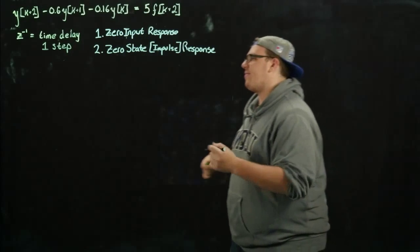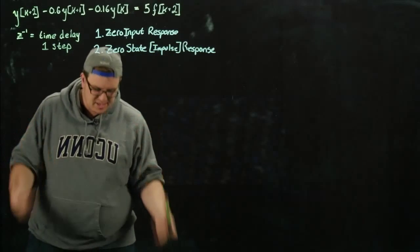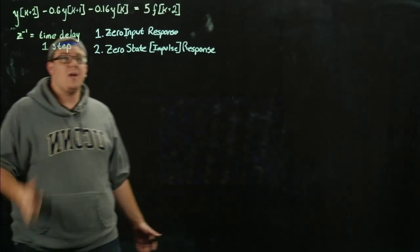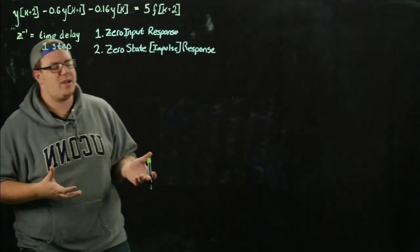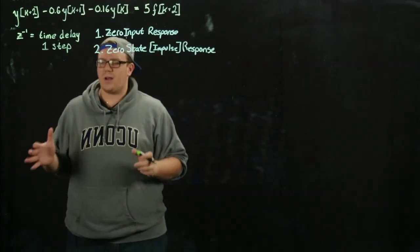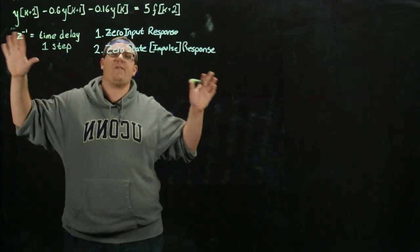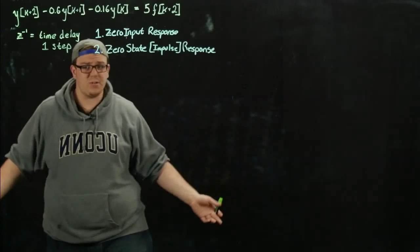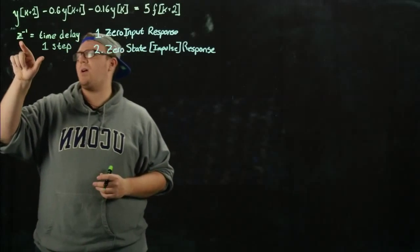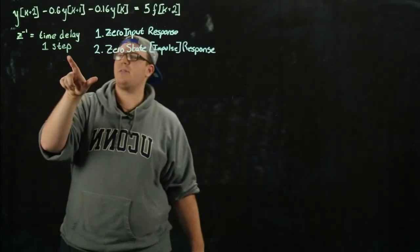The first thing we're going to do is work in the z-plane. We would like to work in the z-transform plane, because just like working in the Laplace domain is easier for continuous functions, working in the z-plane is easier for discrete functions because it allows us to write simple transfer functions. We're going to exploit the fact that the z-inverse operator is a time delay of one step.